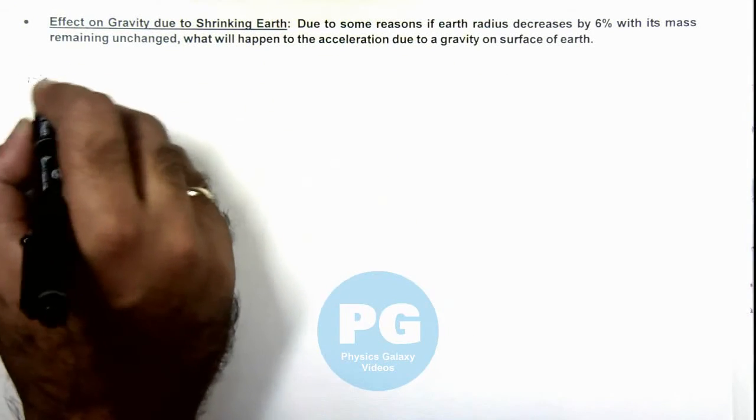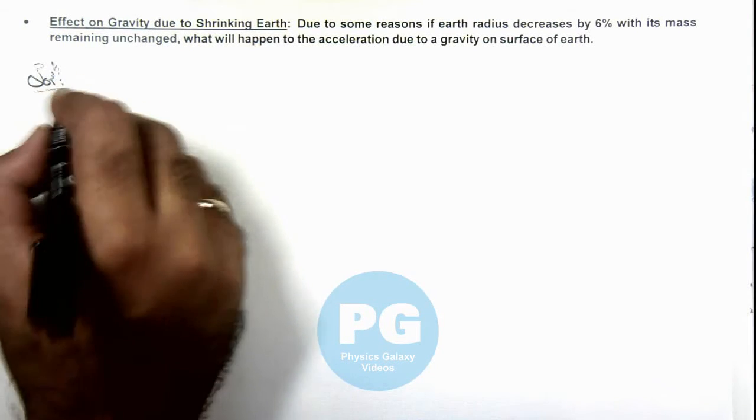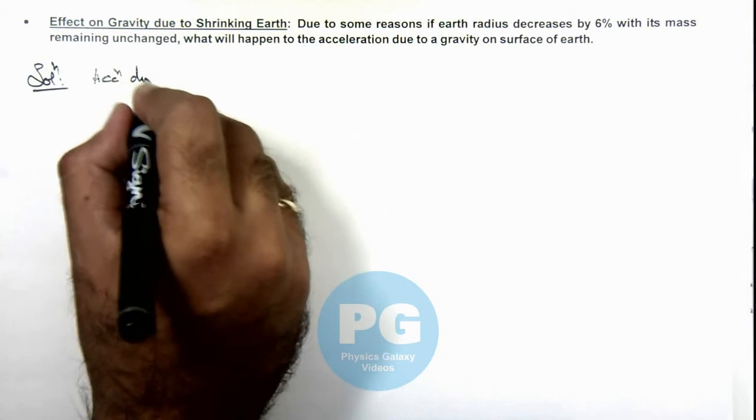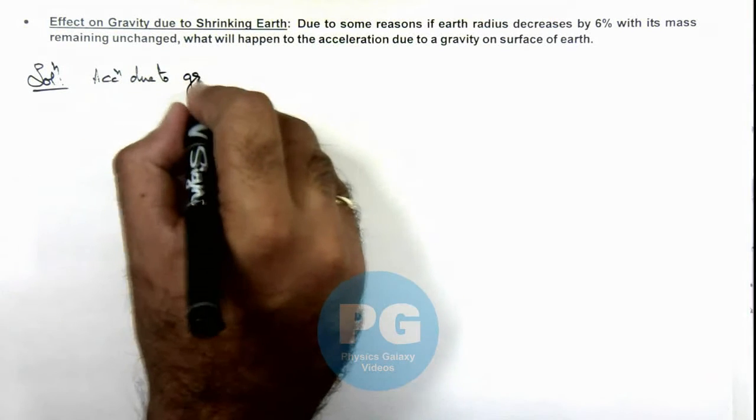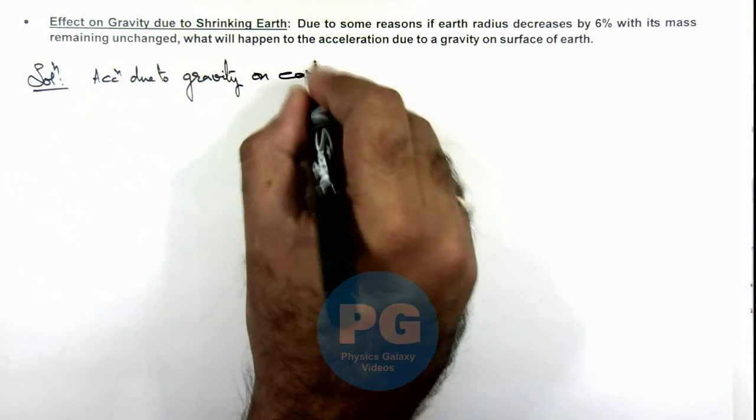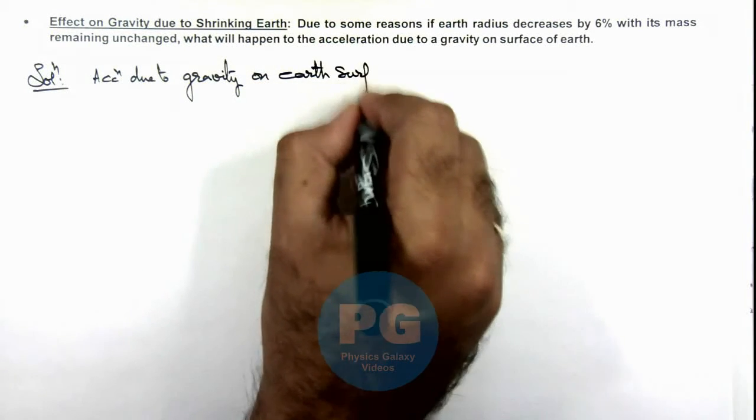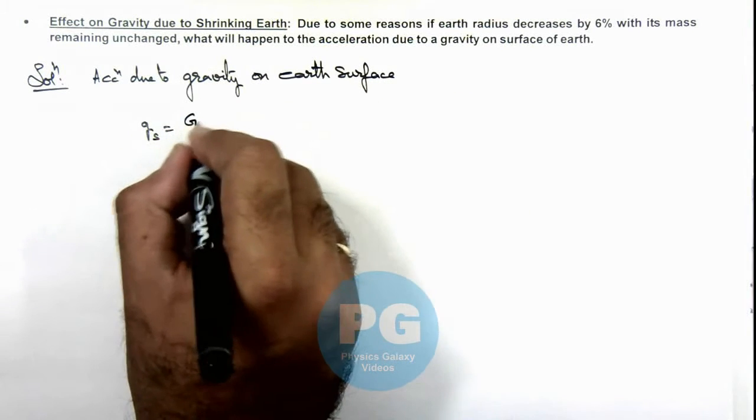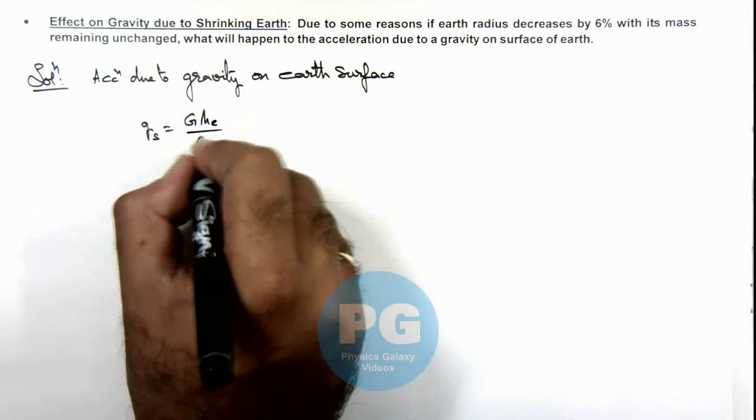We already studied in concept videos that acceleration due to gravity on Earth's surface can be given as g_s = GM_e/r_e².